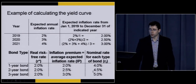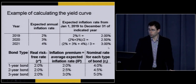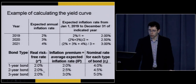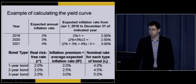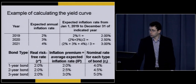For a three-year bond, we average inflation over 2019, 2020, and 2021: (2% + 3% + 4%) / 3 = 3%, and add that to our 2% real risk-free rate, giving a nominal rate of 5% on a three-year bond. If we were to graph a yield curve based on our expected inflation rate and real risk-free rate, we would see an upward-sloping yield curve — it is actually increasing.